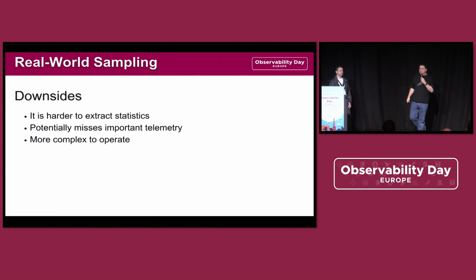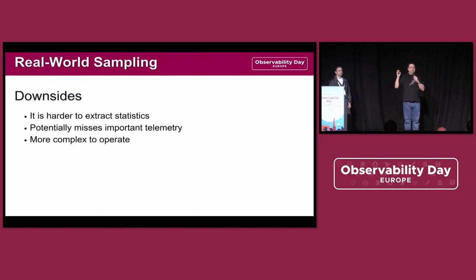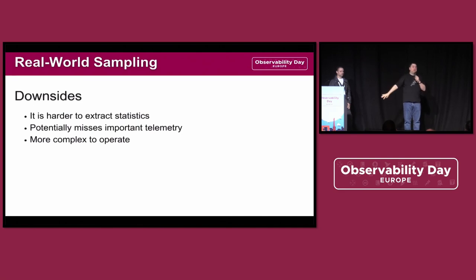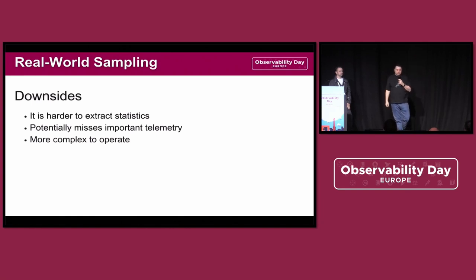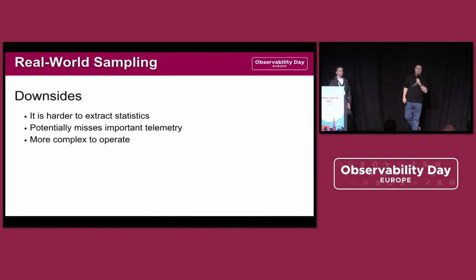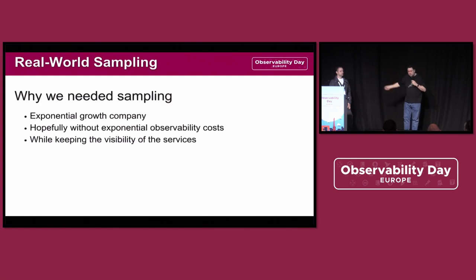It potentially misses important telemetry data. If you're waiting five seconds for data to come in and decide a trace looks fine and drop it, then a new span arrives that makes it interesting — you've already thrown that data out. It is indeed more complex to operate: you have to think about another layer of collectors, load balancing, and how to do that. Now I'll pass it back to Alexandre to explain why they needed sampling at Pismo.